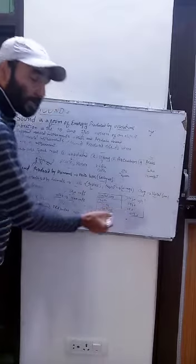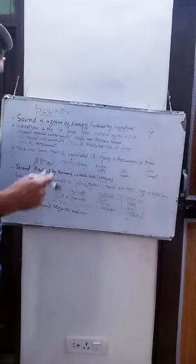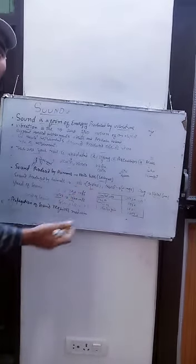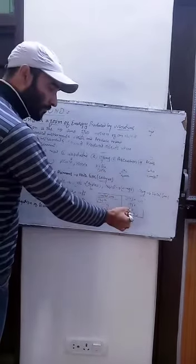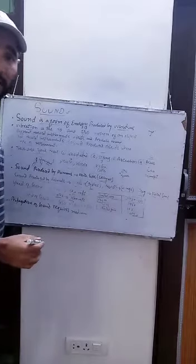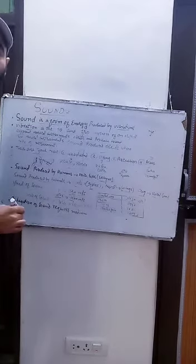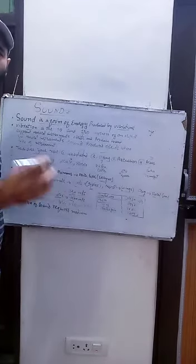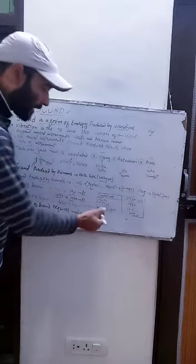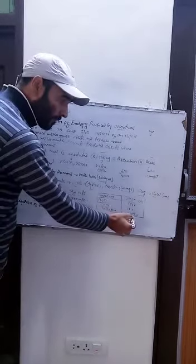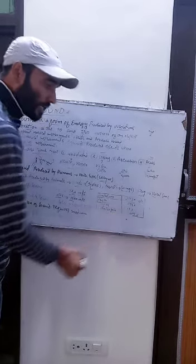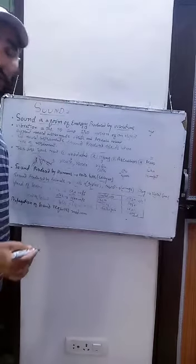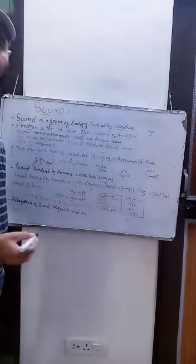In water, which has lower density, the speed is 1531 meters per second. If we talk about hydrogen gas, which is very light, the speed is about 1284 meters per second in hydrogen.